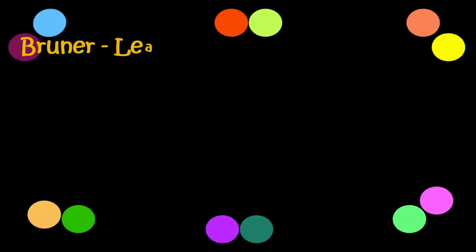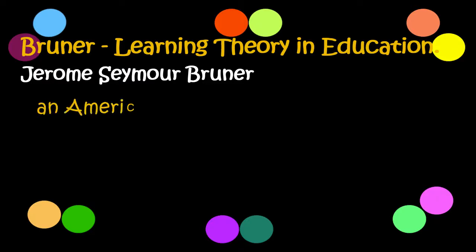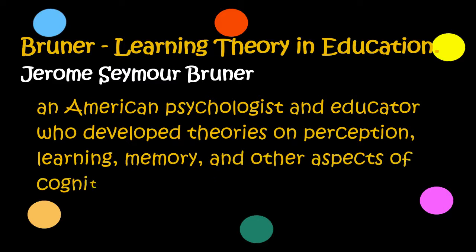Jerome Bruner, in full Jerome Seymour Bruner, was an American psychologist and educator who developed theories on perception, learning, memory, and other aspects of cognition in young children.